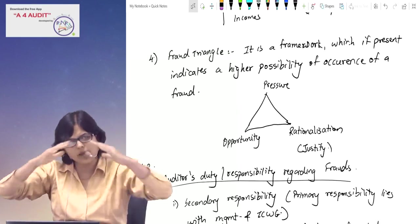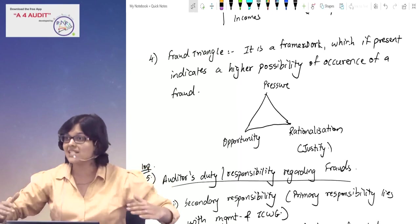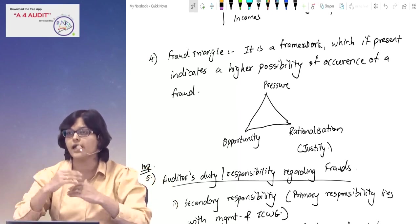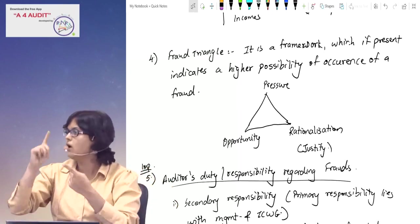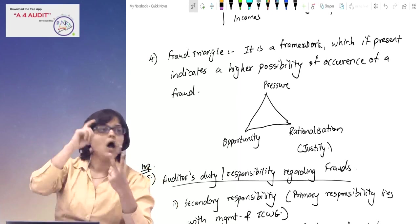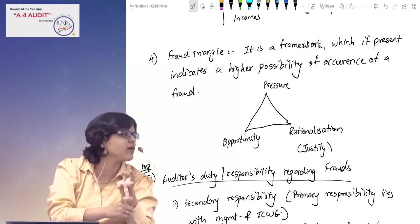After that, we have said fraud triangle. What is the framework? If you look at this framework, then the chances of frauds are high. Three parameters: you will see pressure, opportunity, and then rationalization factor.